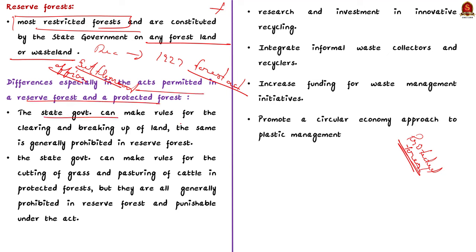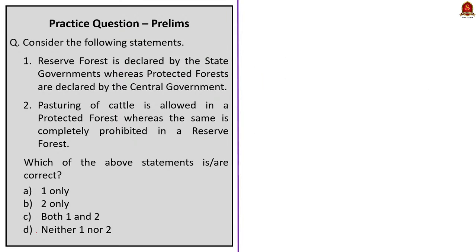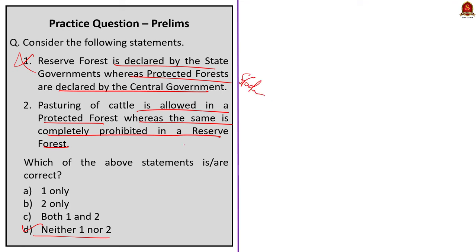Key differences between reserve forests and protected forests: Clearing or breaking up forest land for cultivation is allowed in protected forests but generally prohibited in reserve forests. Cutting grass or allowing cattle to graze is generally prohibited in reserve forests and punishable under the Act. The practice question: Statement 1 is incorrect — both reserve forests and protected forests are declared by the state government. Statement 2 is also incorrect — pasturing is allowed in reserve forests with the permission of the Forest Settlement Officer; it is not completely prohibited. The correct answer is option D — neither one nor two.